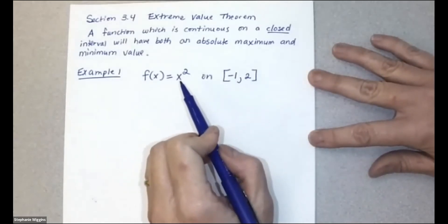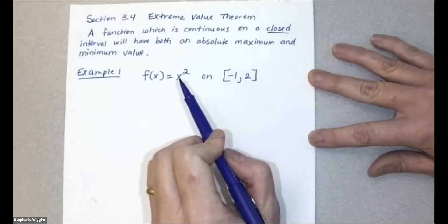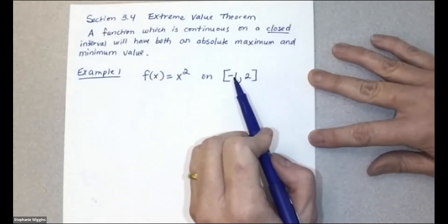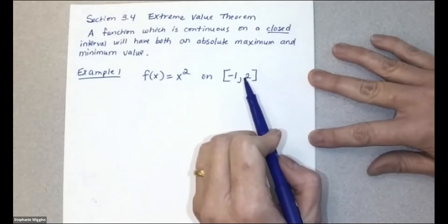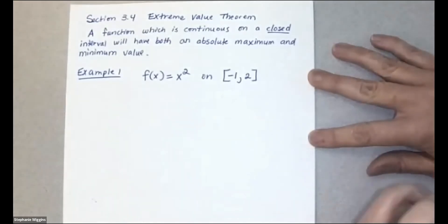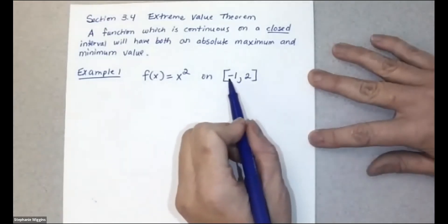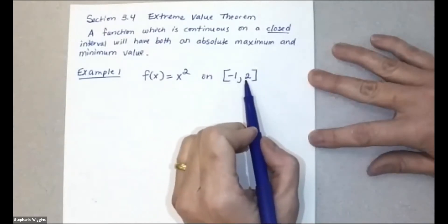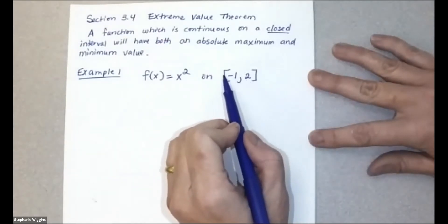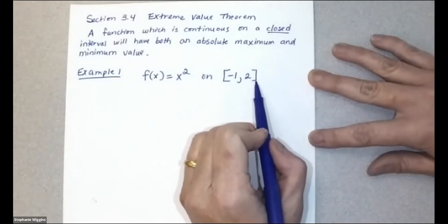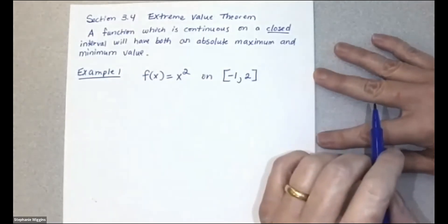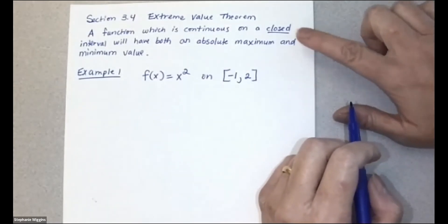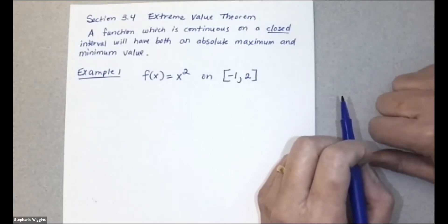So all the x values used as input for this function are going to range between negative one and two. x is going to lie within this interval, and it includes the endpoints — that's why we use square brackets to show that they're included. That's what a closed interval is: it just includes the endpoints.